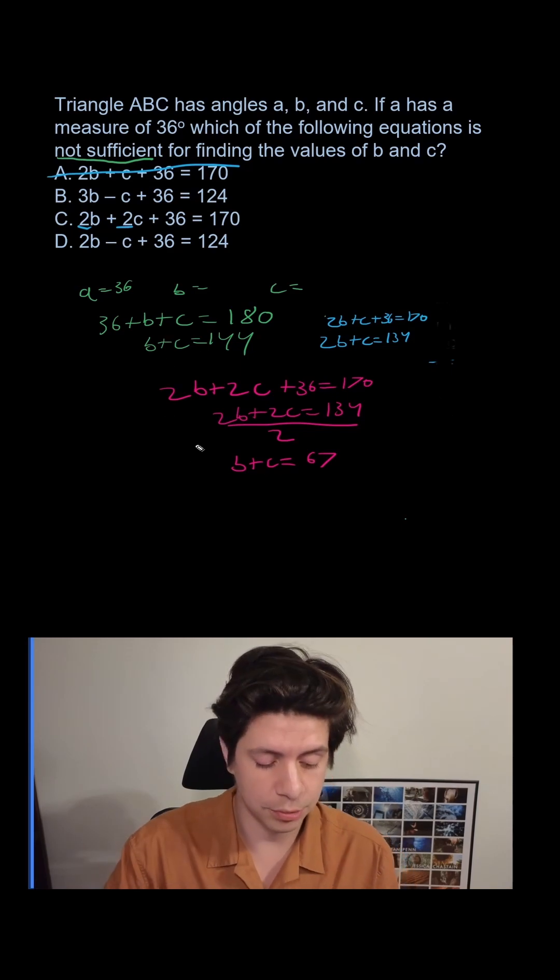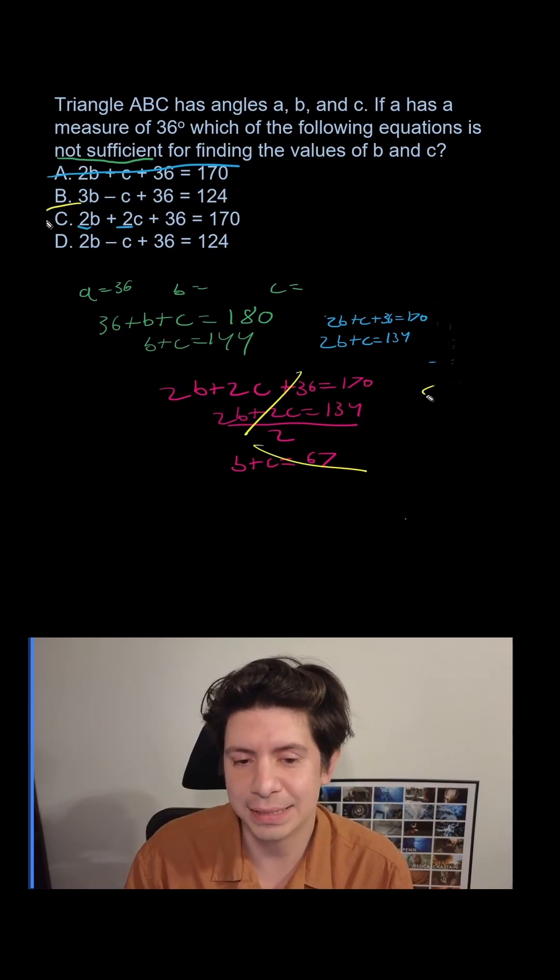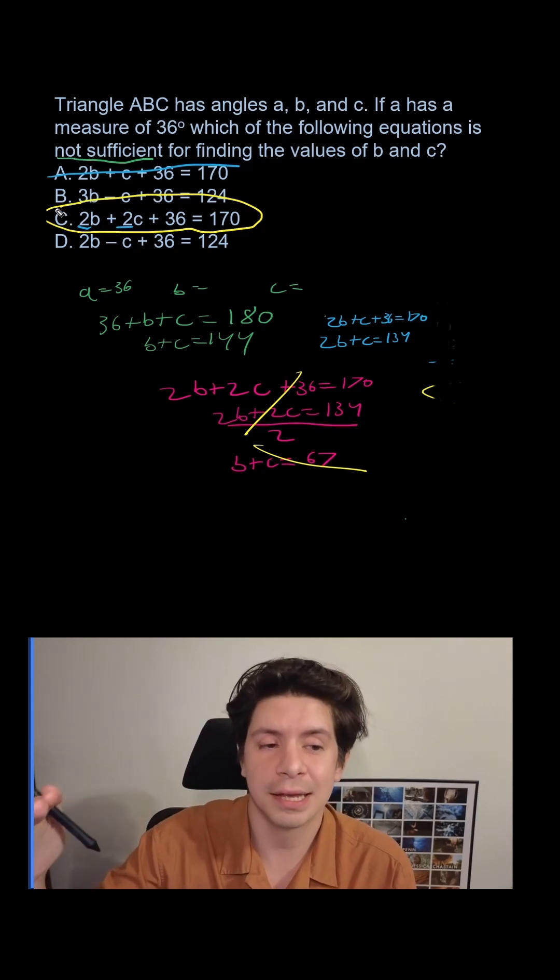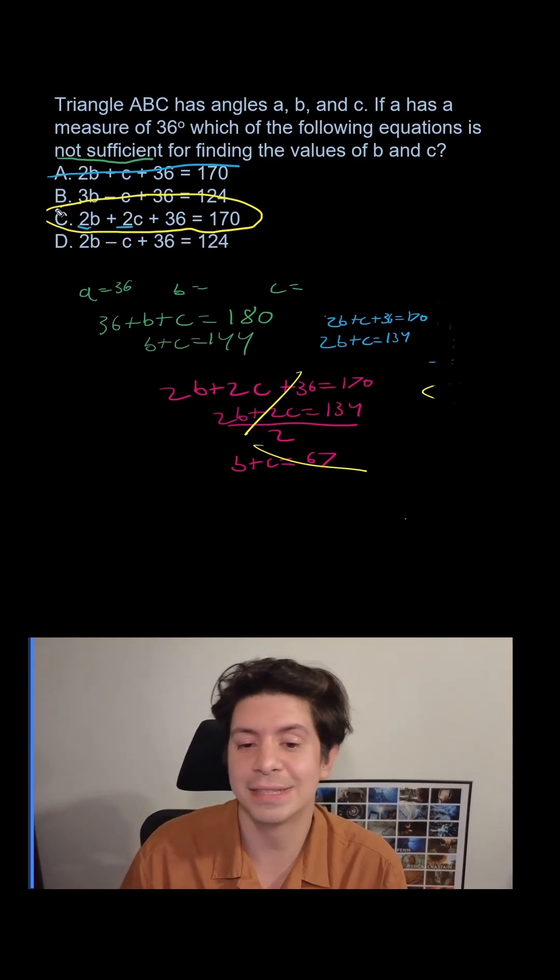We wouldn't find out that this would work. So this one won't work for us. So it has to be C because that's the one that won't work because it gets us back to the base with B plus C just like the original equation. Okay, so you need to have different variables.